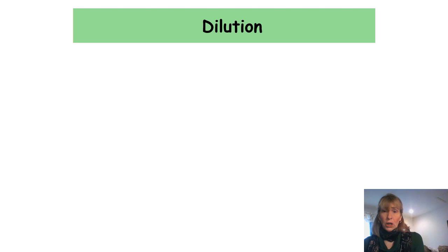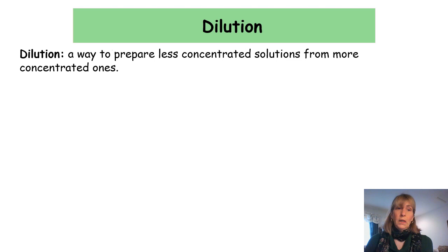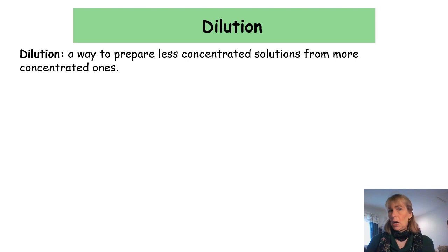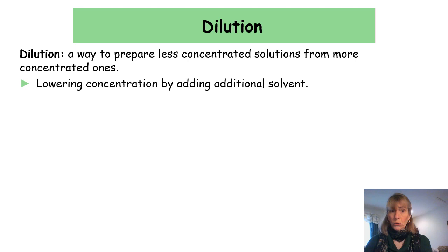Another super important solution topic is dilution. Dilution is how chemists prepare less concentrated solutions from more concentrated ones. More concentrated solutions have a higher amount of solute; less concentrated have less. In dilution, we take a concentrated solution and prepare a less concentrated one by adding additional solvent.